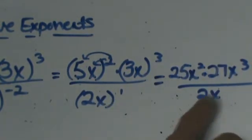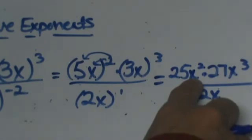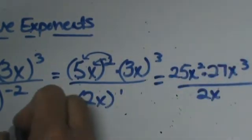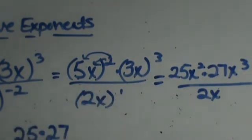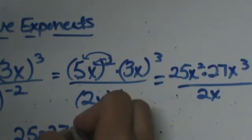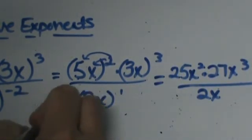Notice we have an x, x to the second, x to the third so on top I am going to have 25 times 27 which is going to be 675.